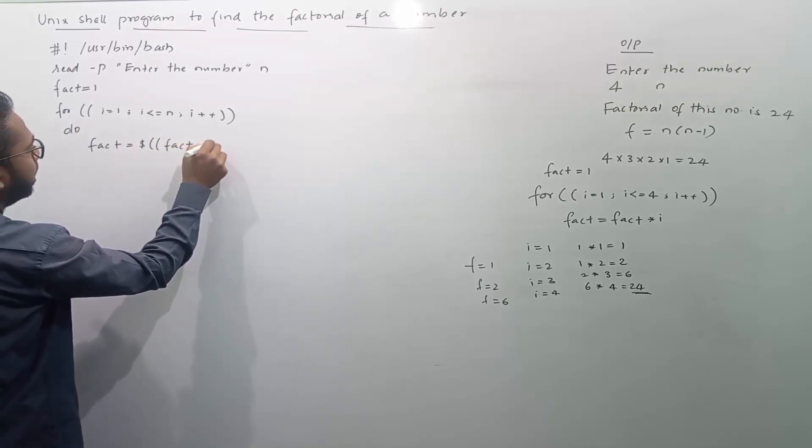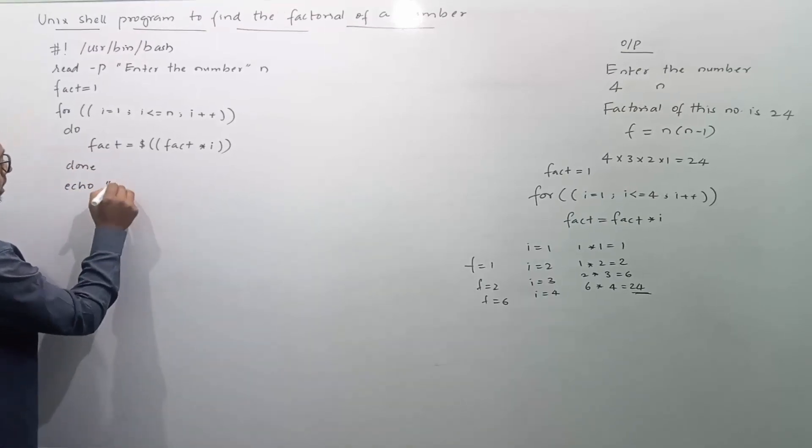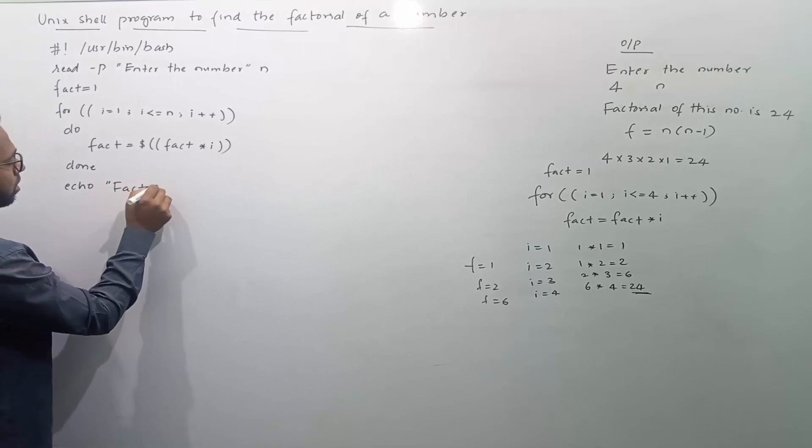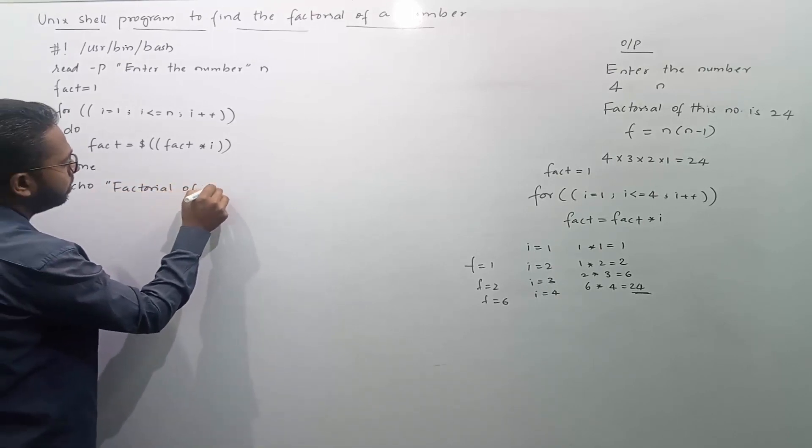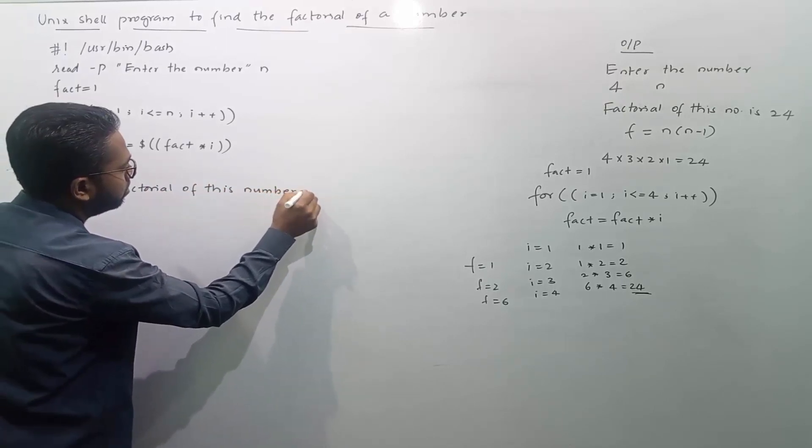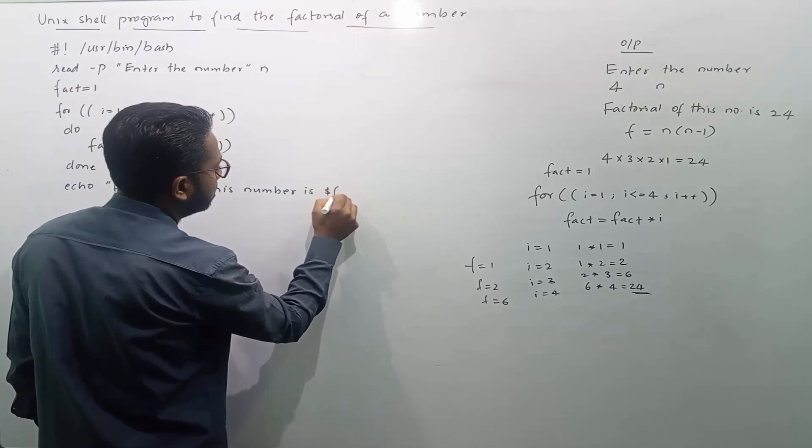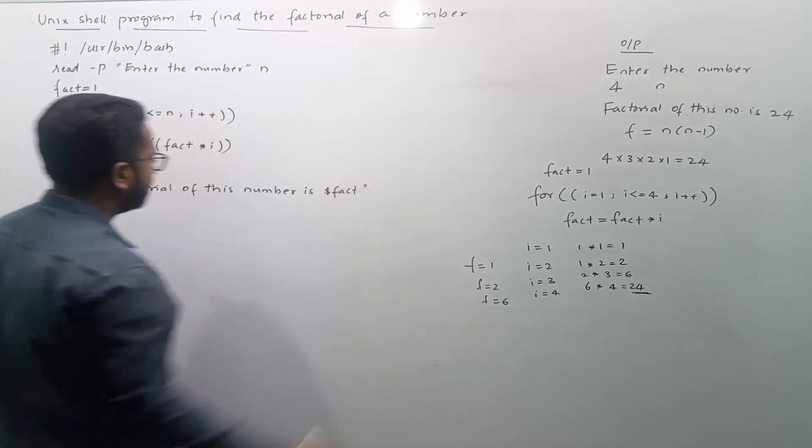i is equals to 1. I will start the for loop with initial value i equals to 1. i is less than or equals to n. i plus plus do fact is equals to dollar two brackets fact into i close both the brackets done